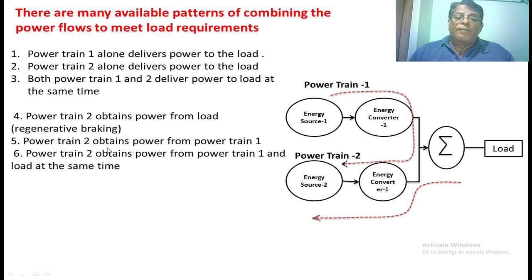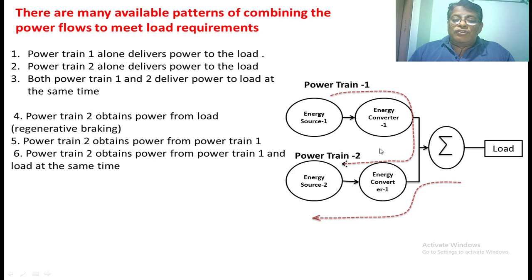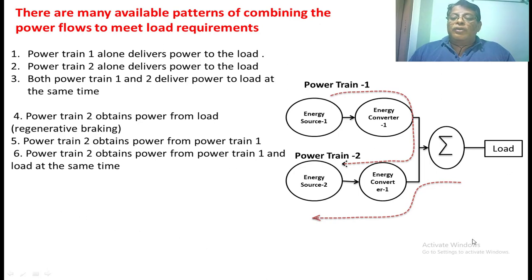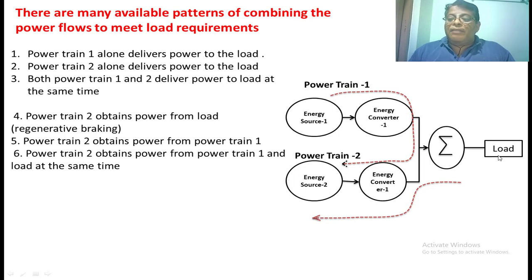In the fifth mode, power train 2 obtains power from power train 1. Suppose the vehicle is stationary and does not require any power, but the battery has no charge — by that time the IC engine can charge the battery. In the sixth mode, power train 2 obtains power from power train 1 and also gives power to the load. When the vehicle is going on a normal road, the load does not require much power, and there is no charge in the battery. So whatever mechanical power the load requires is given by the IC engine, and additionally the IC engine charges the battery.